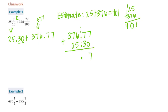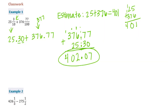7 plus 0 is 7, 7 plus 3 is 10, carry the 1. 1 plus 6 is 7 plus 5 is 12, carry the 1. 1 plus 7 is 8, plus 2 is 10, carry the 1, and 1 plus 3 is 4. So our answer is 402 and 7 hundredths, which is very close to 401.